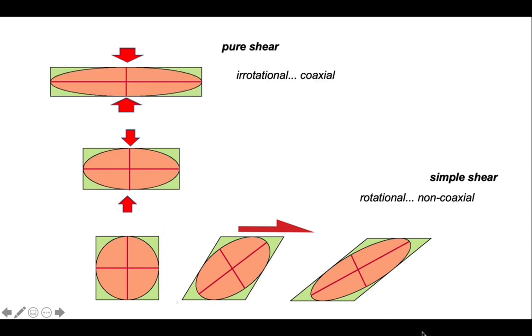Pure shear is irrotational and coaxial. Each strain increment is superposed on the other with the axes of the strain ellipse superposed one on the other. As such, pure shear distorts but doesn't generate rotation of the strain ellipse.